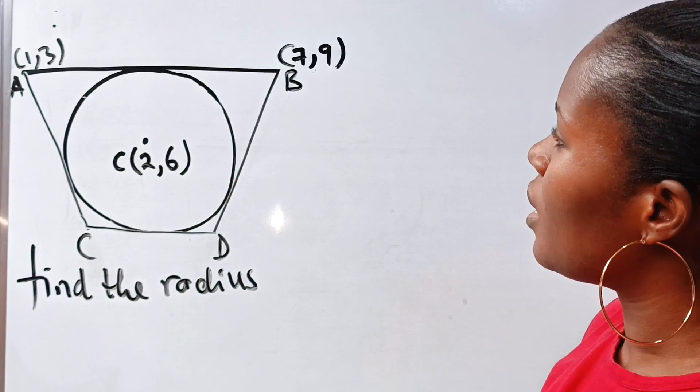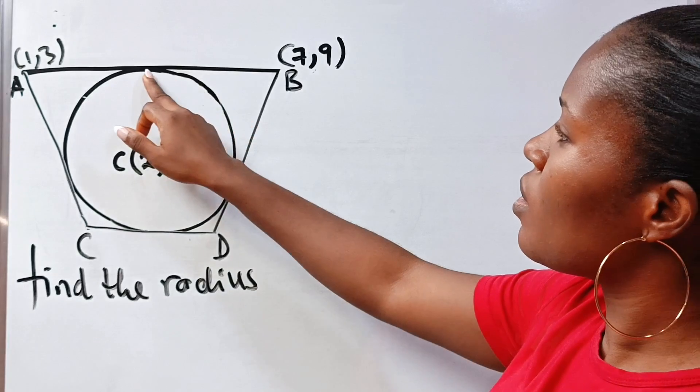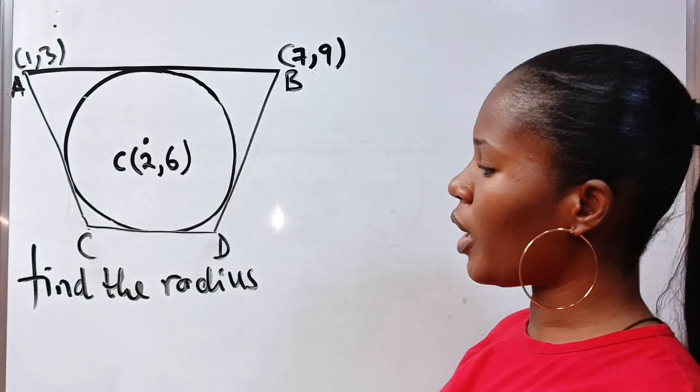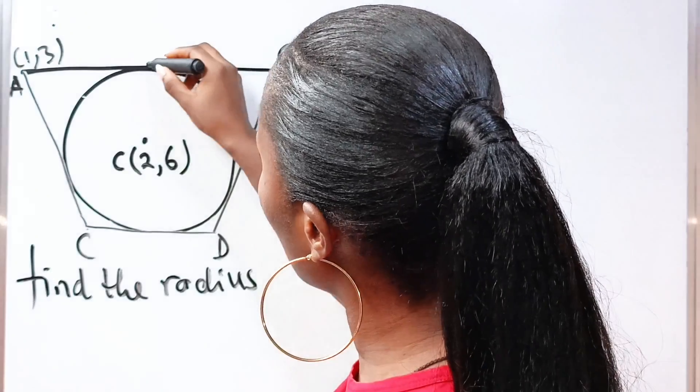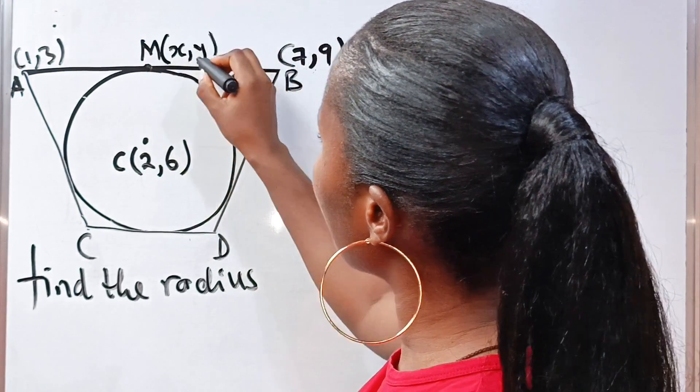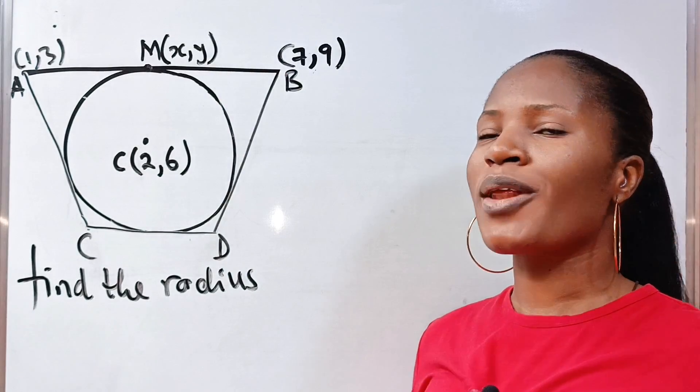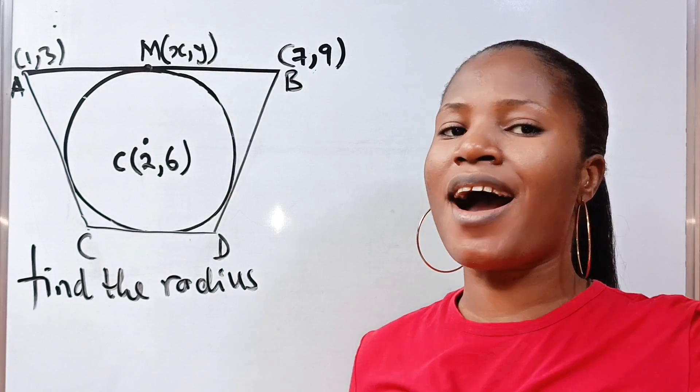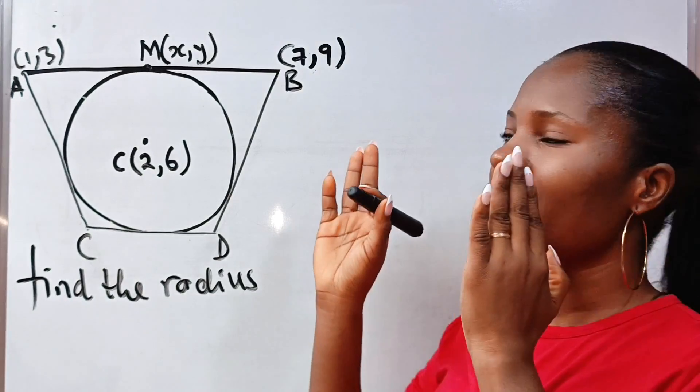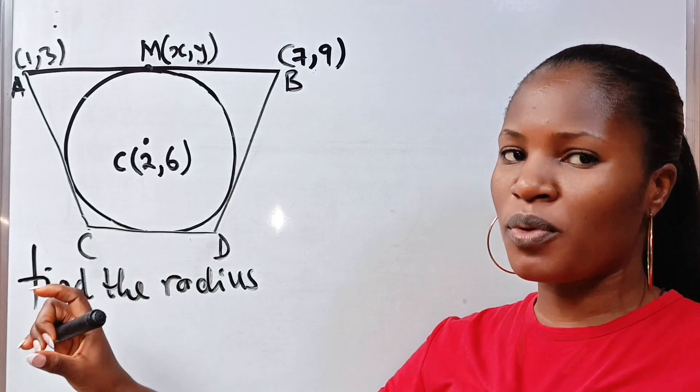Now first of all, let us find, we are told that this circle touches AB at its midpoint. So that is what we are told in the question. So let's call this midpoint M and let's try to find the x- and y-coordinates of the midpoint M. So let us go back to our high school days. So let us discuss the formula for finding the midpoint between two points.